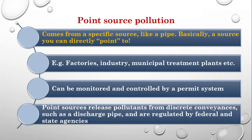That kind of source is known as a point source of pollution — it is basically a source you can directly point to. Examples include factories, industries, and municipal treatment plants. It can be monitored and controlled by a permit system.